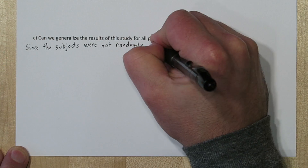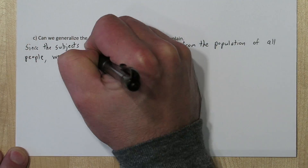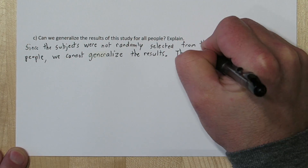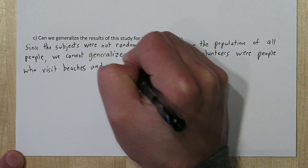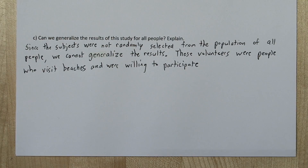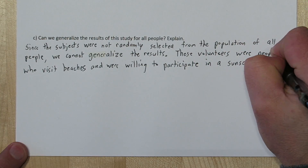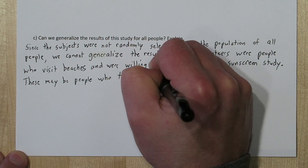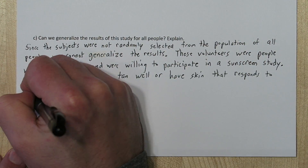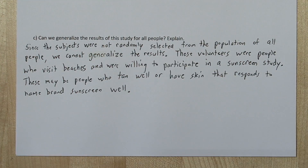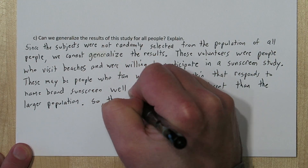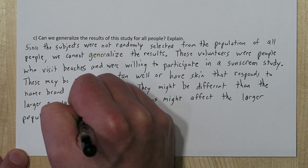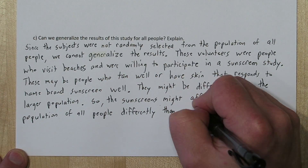Since the subjects were not chosen randomly from the population of all people, we cannot generalize the results. These volunteers were people who visit beaches, and also people who were willing to participate in a sunscreen study. They might be people who tan easily, or maybe people whose skin is really responsive to name brand sunscreen. In other words, they might be different than the general population, so we don't know how the sunscreens will affect the general population. It might be different than how it affected these volunteers.